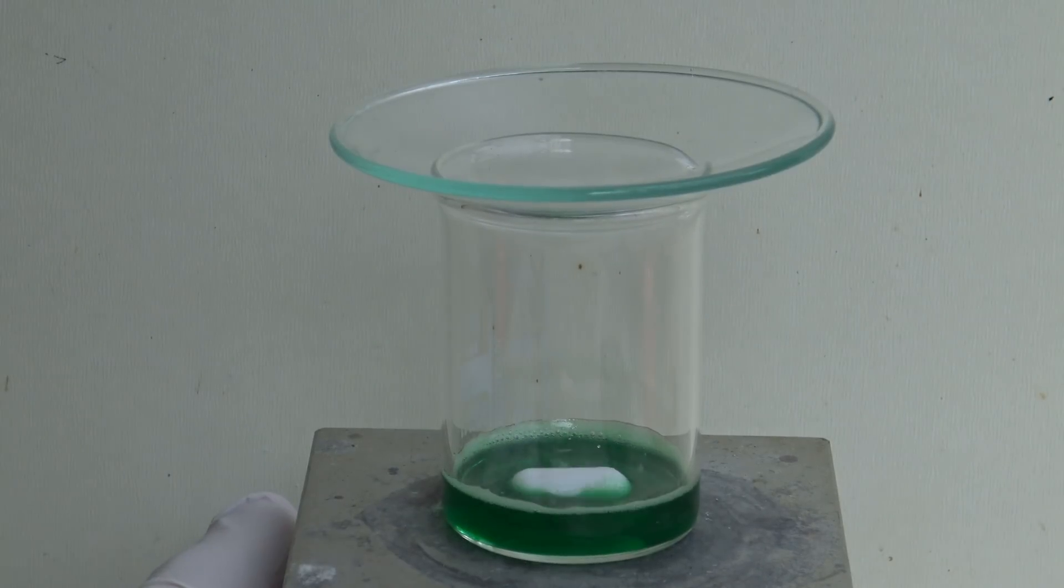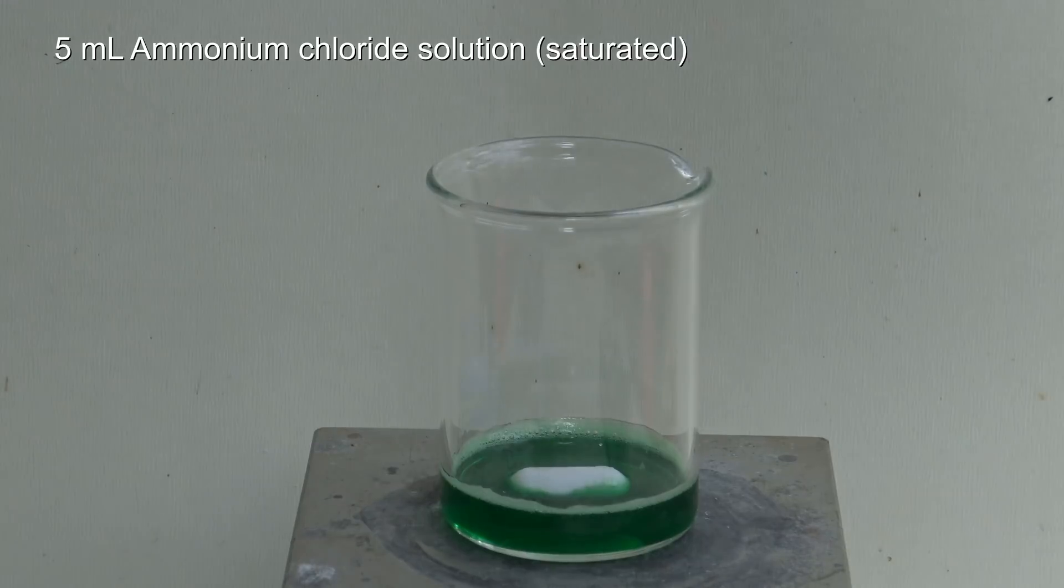When the nickel chloride had dissolved, 5 milliliters of the saturated ammonium chloride solution were added.